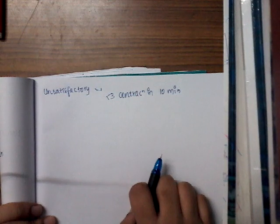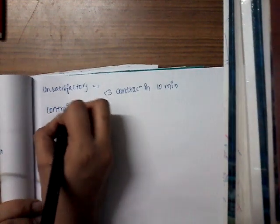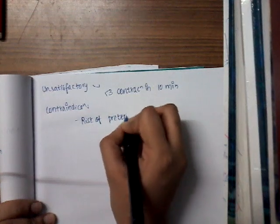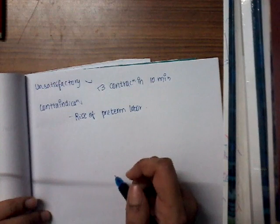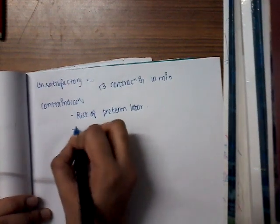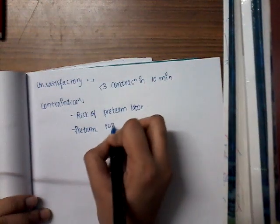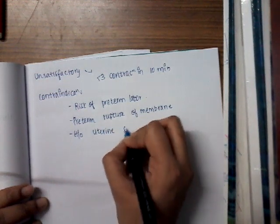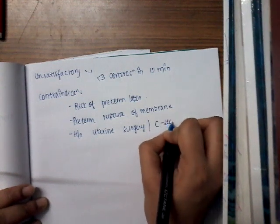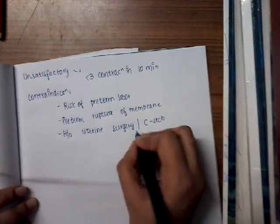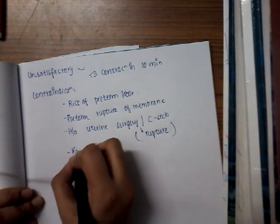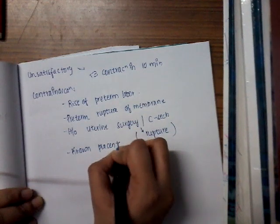This is how we interpret the contraction stress test. The contraindications of this test include: risk of preterm labor, because inducing contractions could precipitate preterm labor; preterm rupture of membranes, as ruptured membranes could lead to labor; a history of uterine surgery or cesarean section, since induced contractions can cause uterine rupture; and placenta previa, in which case the test is also not performed.